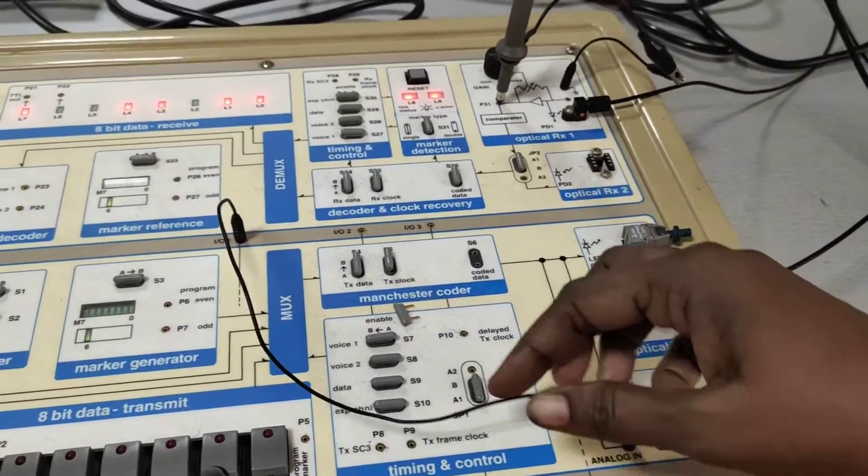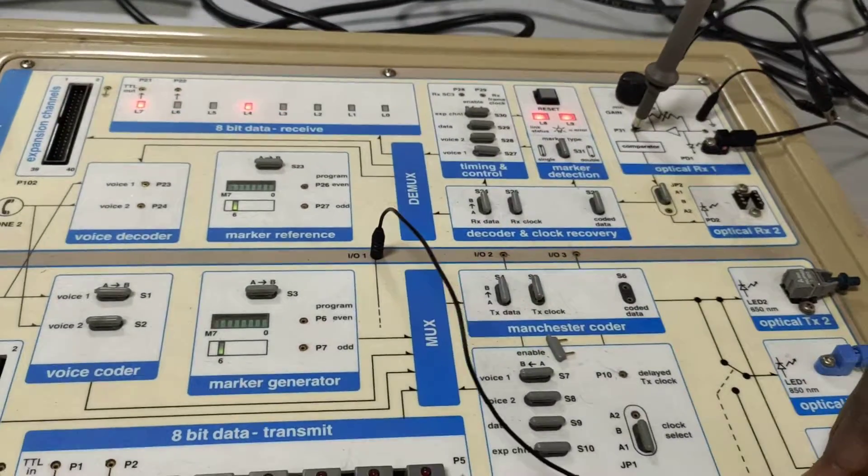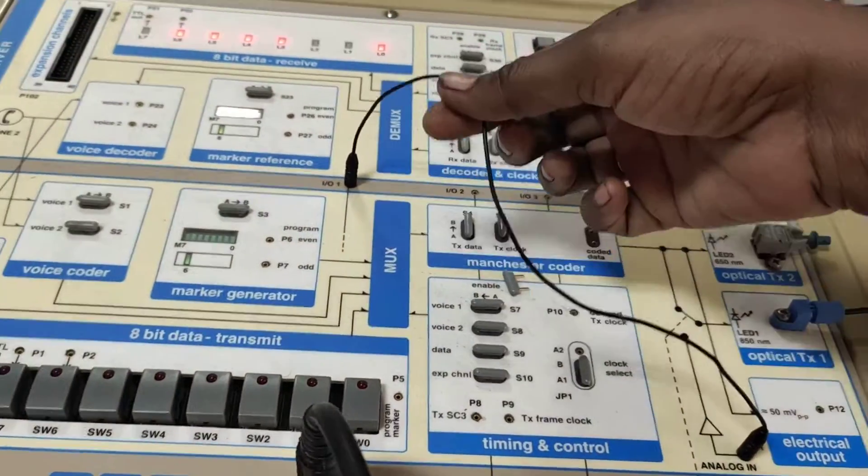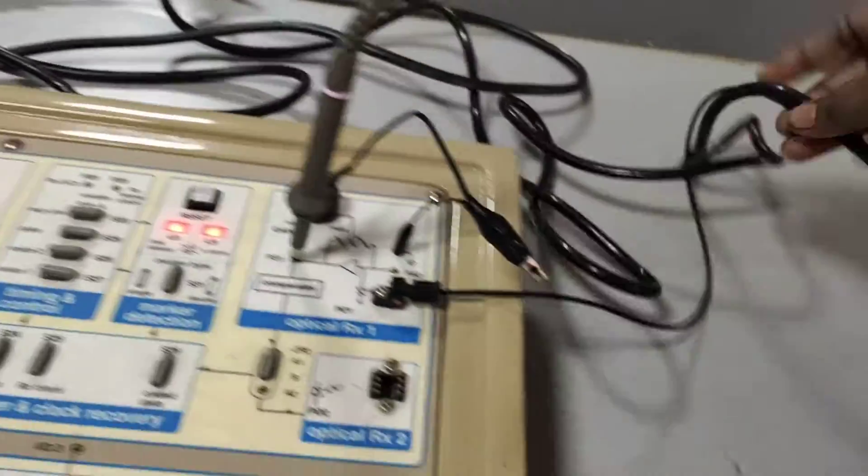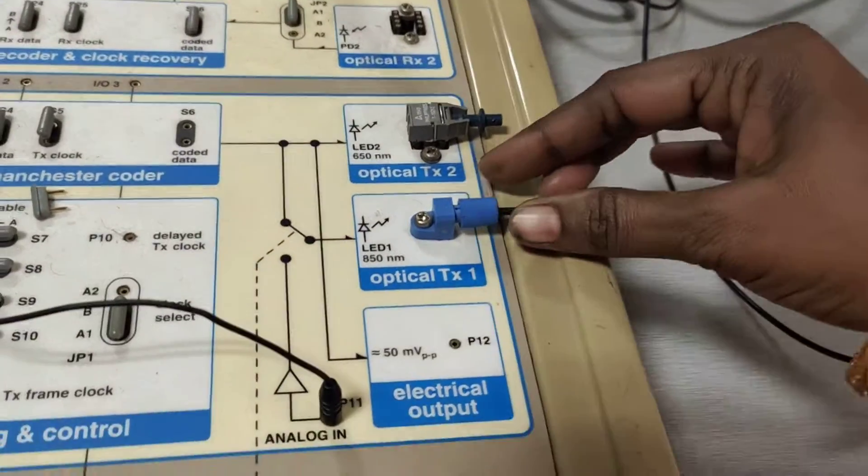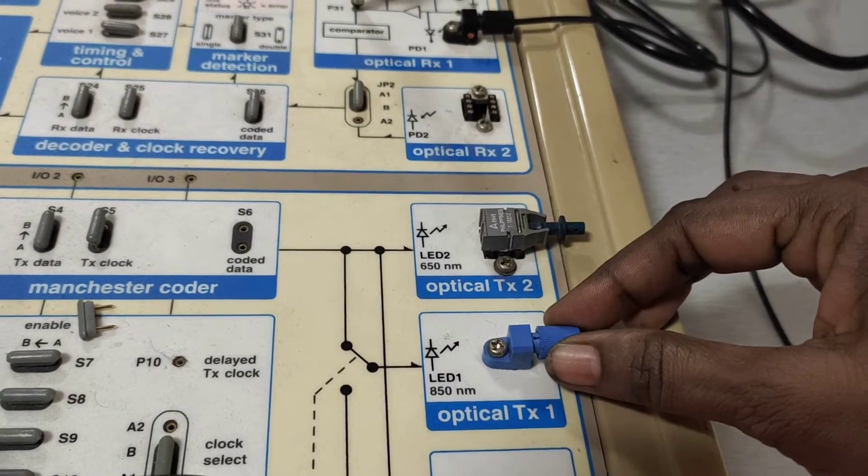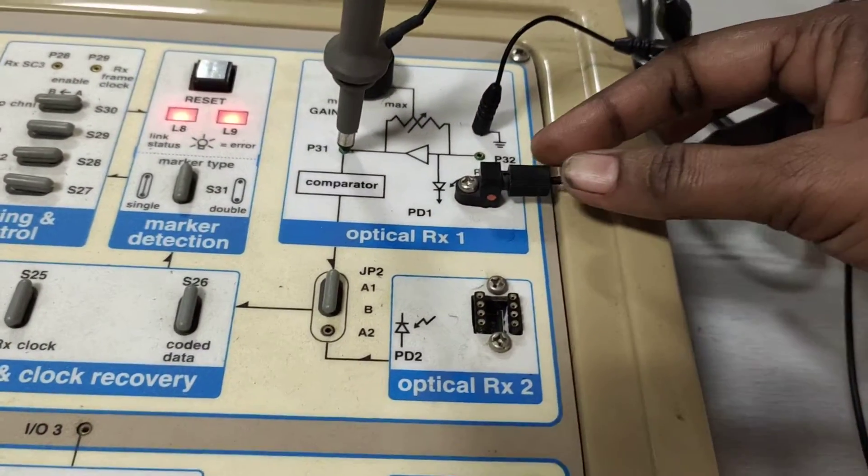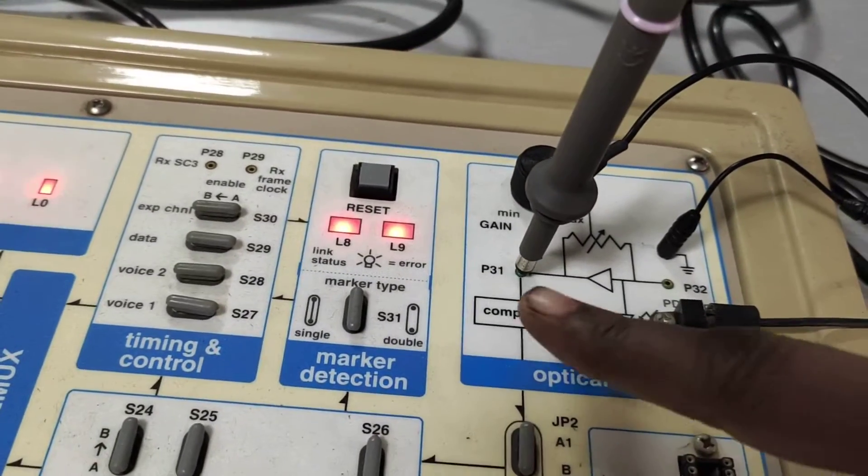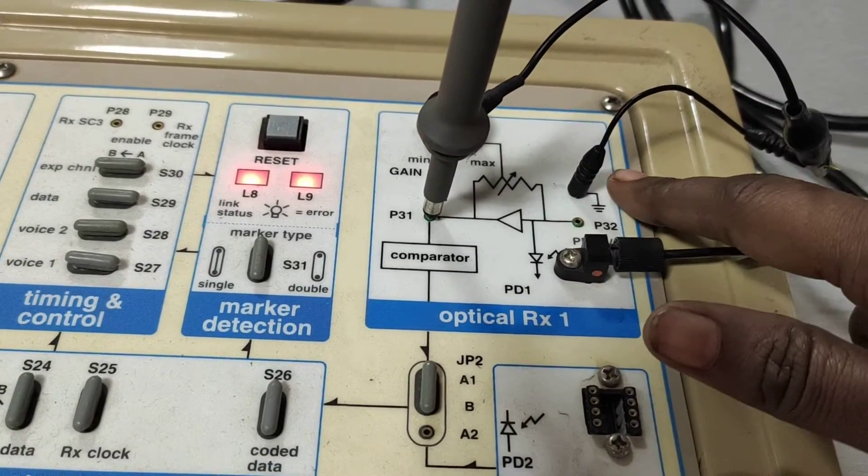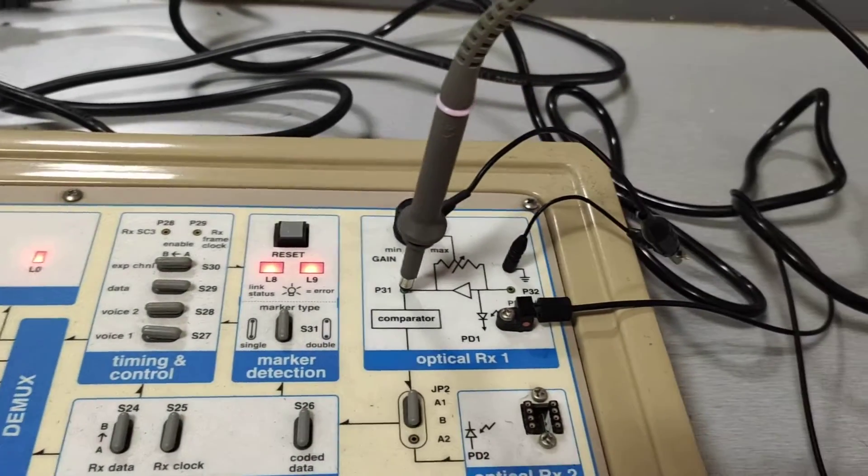With the help of patch cord, from the IO 1 to the analog 1 in is connected via this patch cord. One meter length of optical cable is considered. One end of the cable is connected to transmitter 1 with 850 nanometer wavelength LED source, and another end is connected to receiver 1. We are going to take the output at P31 and another point is connected to ground. P31 is connected to CRO.